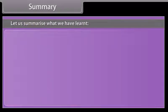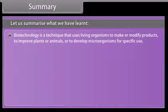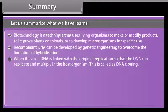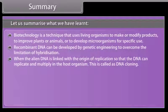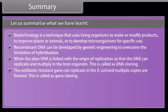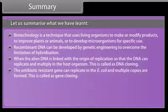Summary. Let us summarize what we have learnt. Biotechnology is a technique that uses living organisms to make or modify products to improve plants or animals or to develop microorganisms for a specific use. Recombinant DNA can be developed by genetic engineering to overcome the limitation of hybridization. When the alien DNA is linked with the origin of replication so that the DNA can replicate and multiply in the host organism, this is called as DNA cloning. The antibiotic resistant gene can replicate in the E. coli and multiple copies are formed. This is called as gene cloning.